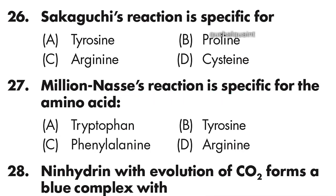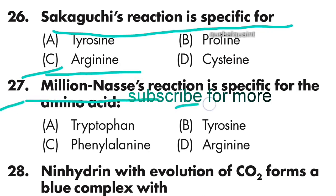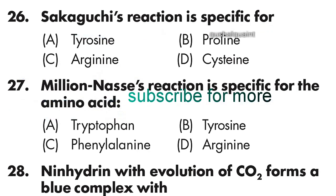Question 26: Sakaguchi's reaction is specific for — option C is right — arginine. Question 27: Millon's assay reaction is specific for which amino acid?